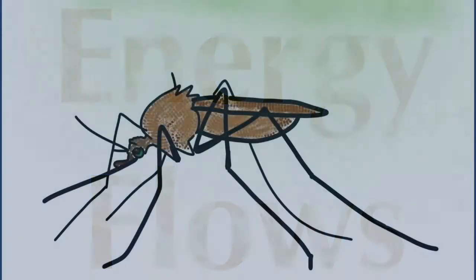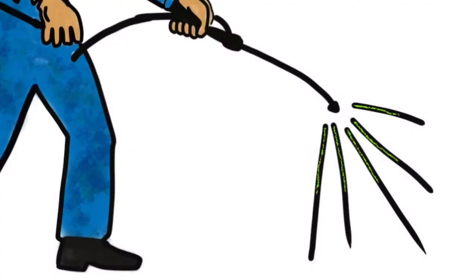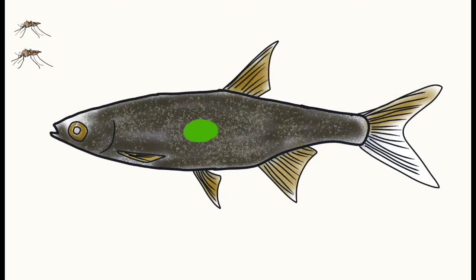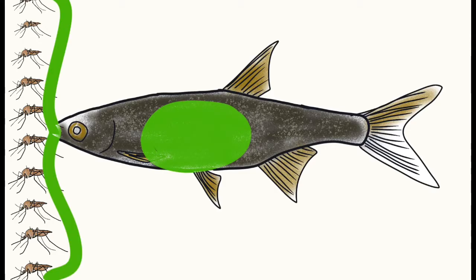But energy flows. DDT's quick success as a pesticide and its broad use in the United States grew, and it worked. However, with energy flow in nature, mosquitoes, which are eaten by minnows, were then transferring the DDT from the mosquito into the minnow.